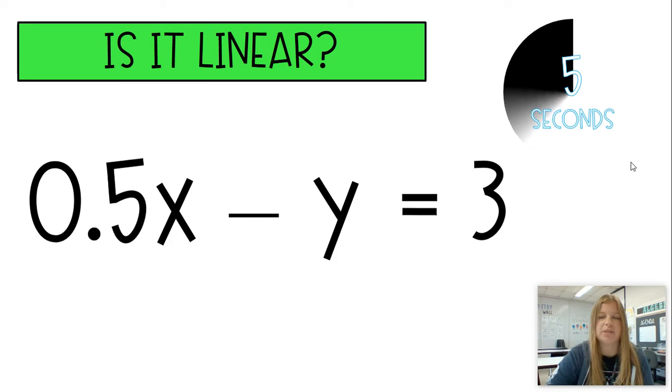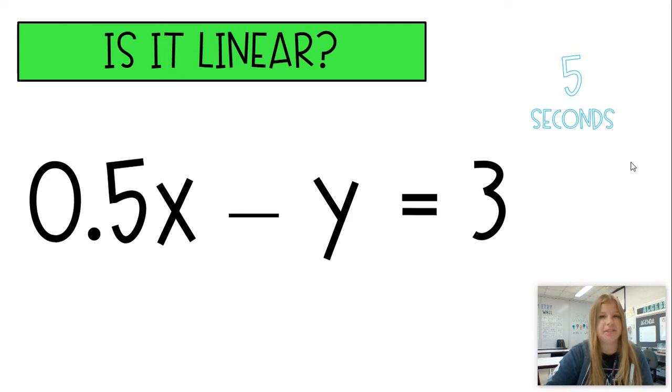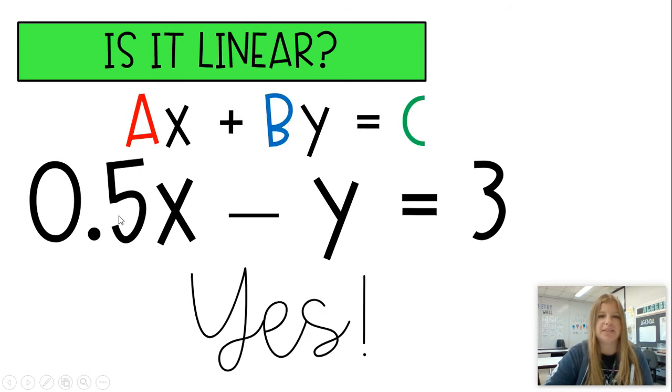0.5X minus Y equals 3. This definitely is linear, but what we should know is that we should have A, B, and C being integers. And since this is 1 half, you're probably going to want to multiply the entire equation by 2. And if I multiply the entire equation by 2, I would get X minus 2Y equals 6. But this is definitely still linear. So even though it's not in proper form, where A, B, and C should be integers, we can force it to become that, and we're good.